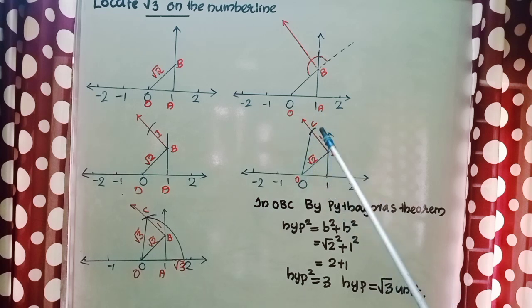Now there is formed one more right triangle. It is triangle OBC. Here base is OB with length root 2 unit, height is BC with length 1 unit. Hypotenuse, we don't know what is the length.